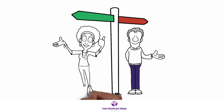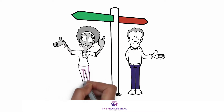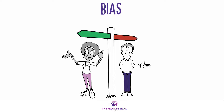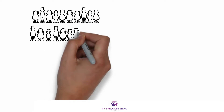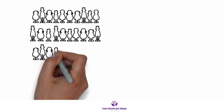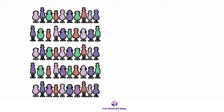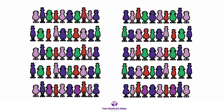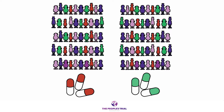When the groups of people are different in important ways, they encourage one outcome over another — we call this bias, and bias is undesirable. Randomized trials help to reduce this bias because they guarantee that the comparison groups have generally similar characteristics at the start of the experiment, and that the only difference is the treatments the groups receive.